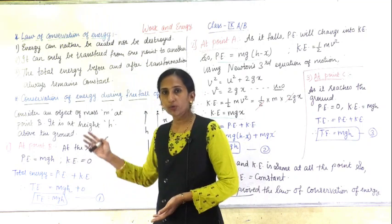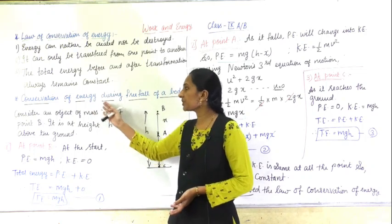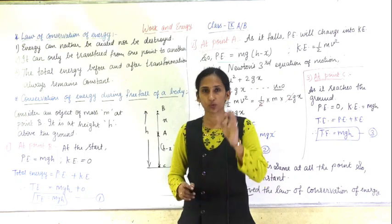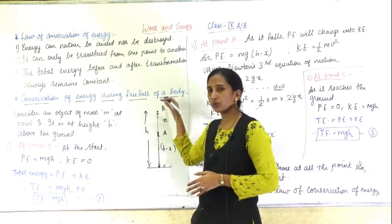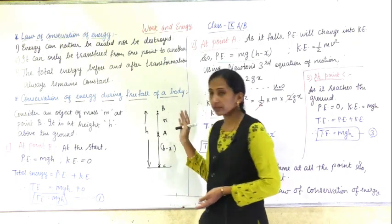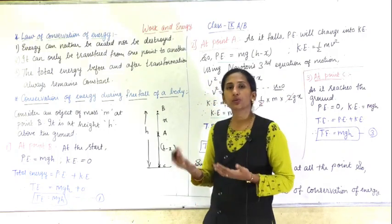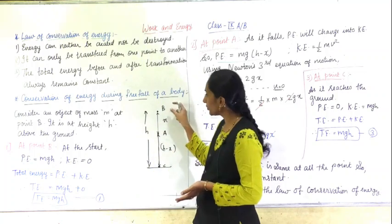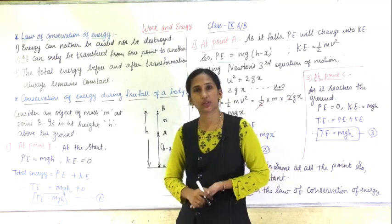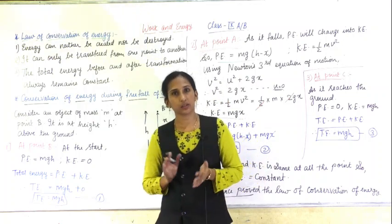Now we are going to see a derivation which proves this law of conservation of energy. The derivation is the conservation of energy during free fall of a body. I will take a body which is going to free fall from a point downwards. We are going to study the cases at point B, point A, and point C, and check what the total energy is at each point.